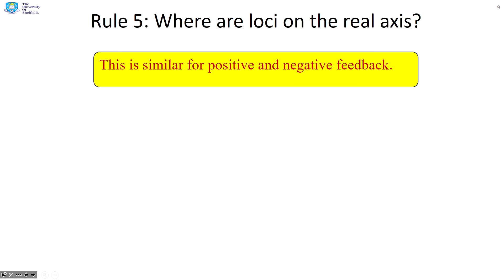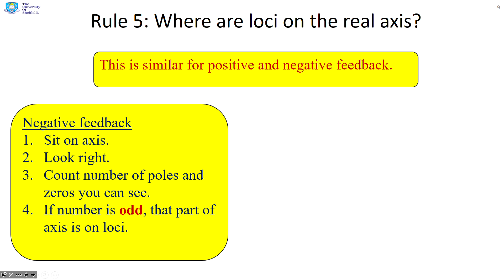Rule five. Now, this is similar for positive and negative feedback. So this is what we did with negative feedback. We basically stood on the axis and looked to the right and counted how many poles and zeros can we see.